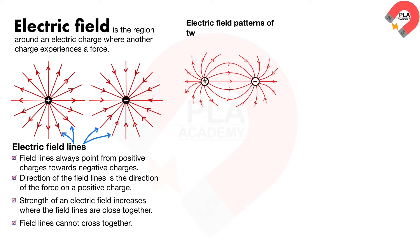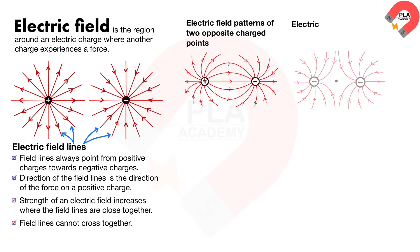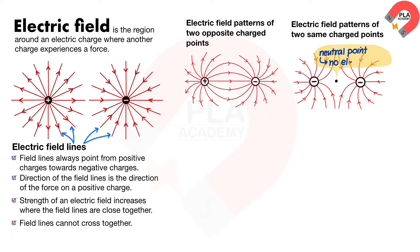Electric field patterns of two opposite charged points. Electric field patterns of two same charged points. This is the neutral point, which is the point that has no electric field due to the charges.